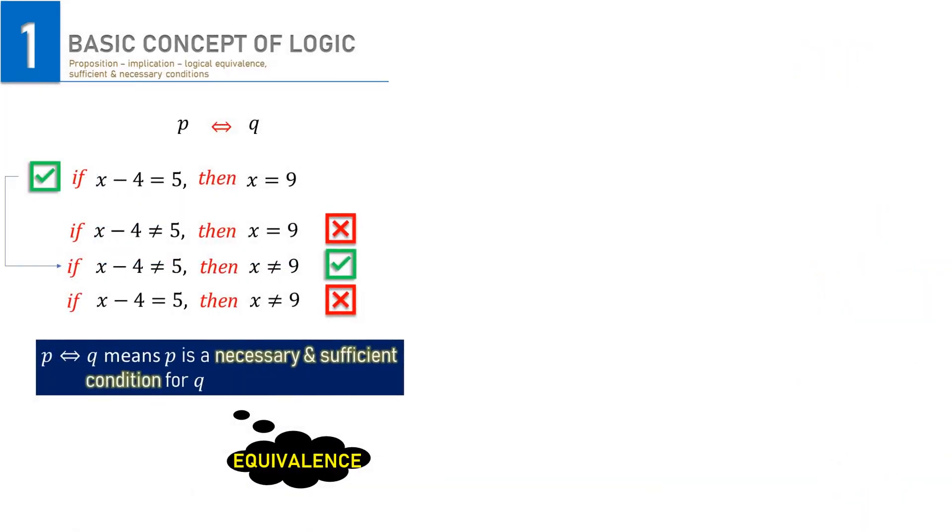Our last case is the logical equivalence. It is symbolized with an equivalence arrow. We read it as P is equivalent to Q or P if and only if Q. We can only have this equivalent P and Q if both P and Q are true or both are false. In other words, P is a necessary and sufficient condition for Q and vice versa.